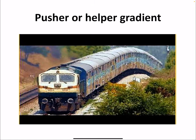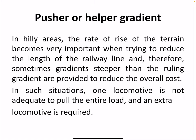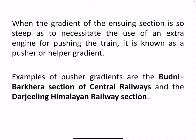The next type is the pusher or helper gradient. In hilly areas, the rate of rise of the terrain becomes very important when trying to reduce the length of the railway line. Sometimes gradients steeper than the ruling gradient are provided to reduce the overall cost. In such situations, one locomotive is not adequate to pull the entire load and an extra locomotive is needed. When the gradient necessitates the use of an extra engine for pushing the train, those gradients are called pusher or helper gradients. Examples include the Dudney Breaker section of Central Railways and the Darjeeling Himalayan Railway sections.